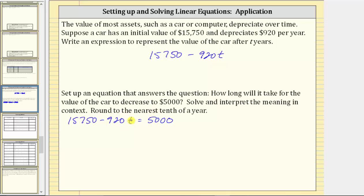The first step is to isolate the variable term on one side of the equation by adding or subtracting. To isolate negative $920t on the left, we need to undo $15,750 by subtracting $15,750 on both sides of the equation. Remember, when solving an equation, we always perform the same operation on both sides of the equation, and therefore the result is an equivalent equation. Simplifying, this difference is zero, which is the reason why we subtracted $15,750 on both sides of the equation. The left side of the equation is now negative $920t equals, on the right side, $5,000 minus $15,750 is equal to negative $10,750.